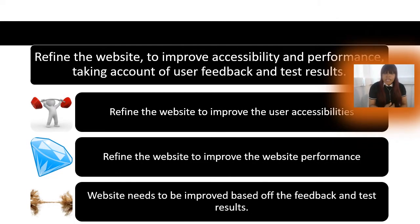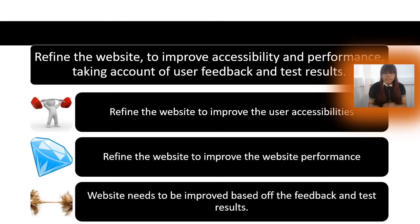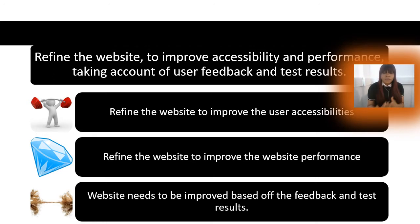For D3, I have broken it down into three different sections so you can see the different areas you need to work on. First, we're going to refine the website to improve user accessibility. Then we are going to refine the website to improve performance — so if your website is a bit slow, you need to work on making image or video files smaller so that your website runs faster. The final section is that we're going to collect feedback and make changes based on it.